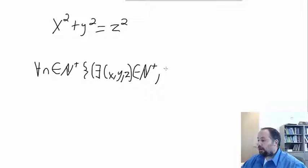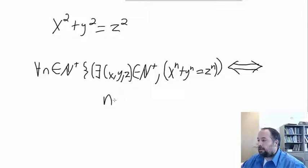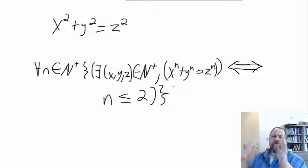such that x to the n plus y to the n equals z to the n implies, and is implied by the statement, n is less than or equal to two, which is kind of a confusing way to say it, but it is correct, right?